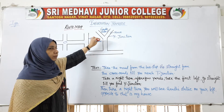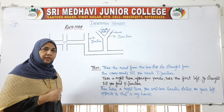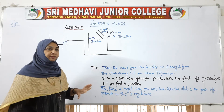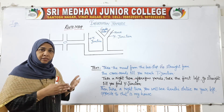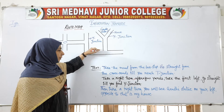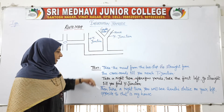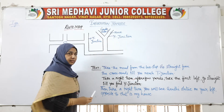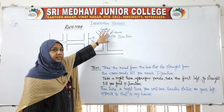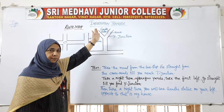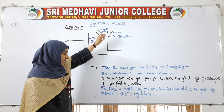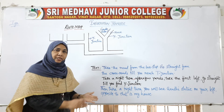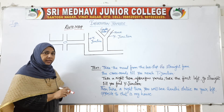After walking a few yards — 100 meters, 50 meters, whatever it may be — go straight till you find the Y-junction. This is an overall imaginary route map, so there is no hard and fast rule about exact distances. Then take a right turn at the Y-junction. You will see Gandhi statue on your left, and opposite to Gandhi statue is my house.